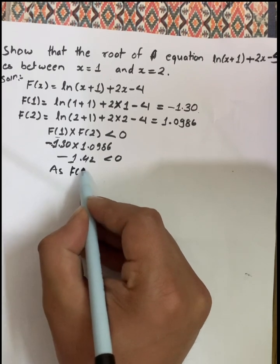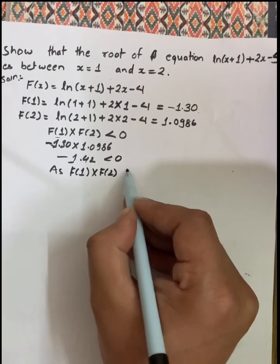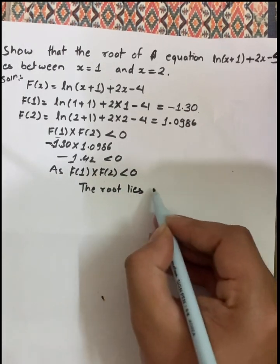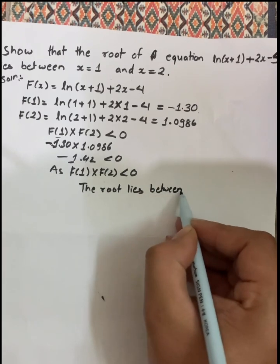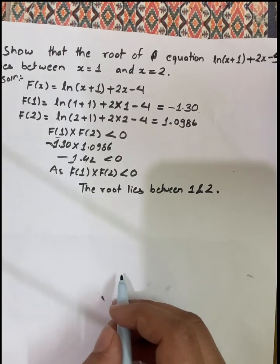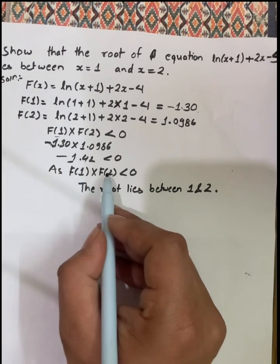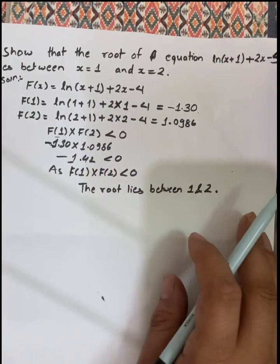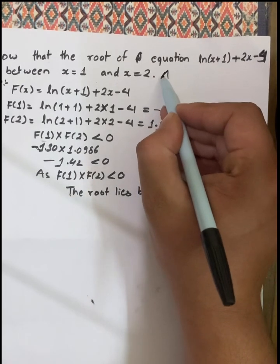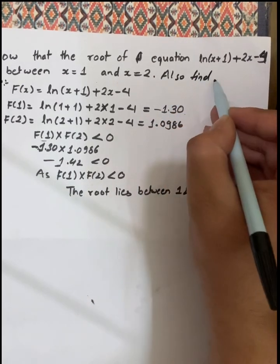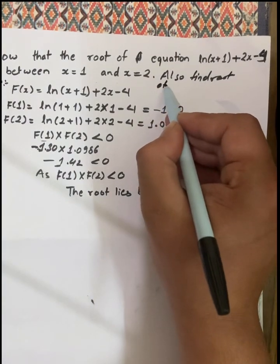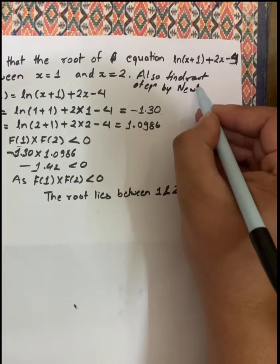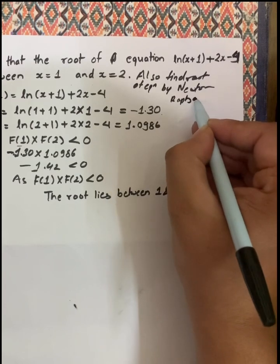Since f(1) multiplied by f(2) is less than zero, the root lies between 1 and 2. Now find the root of the equation by the Newton-Raphson method.